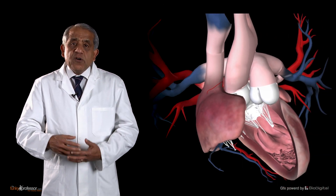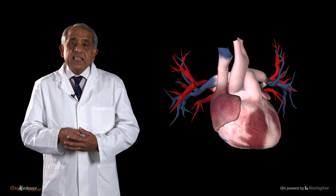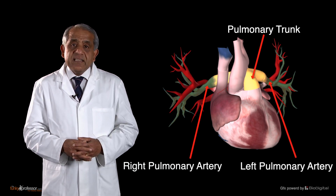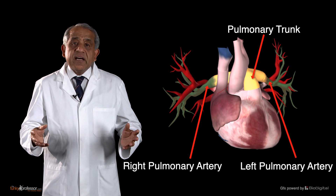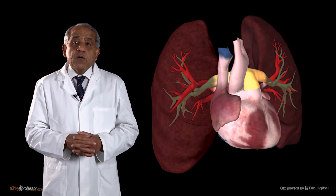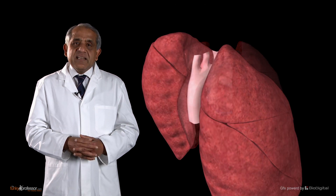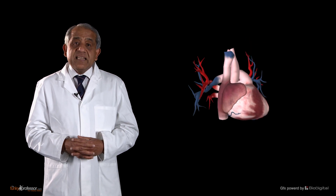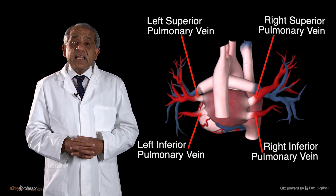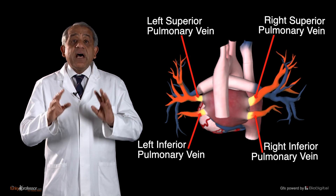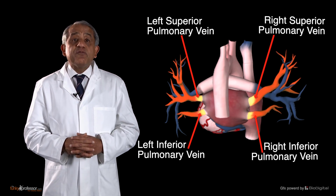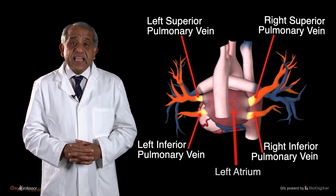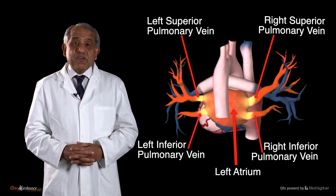All the deoxygenated blood that has entered the right heart is pumped into the pulmonary trunk and thereafter into the pulmonary arteries. Through the two pulmonary arteries, this blood reaches the pair of lungs where it is oxygenated. Each lung discharges its oxygenated blood through a pair of veins — a superior pulmonary vein and an inferior pulmonary vein — giving four pulmonary veins in total, two from each lung. These four pulmonary veins run into the back of the left atrium.